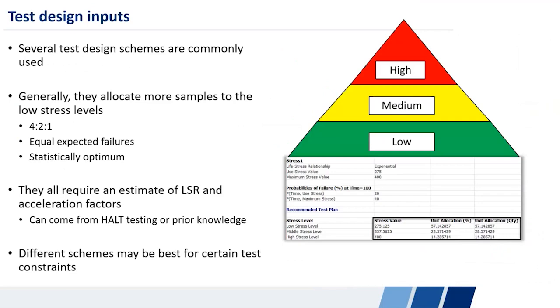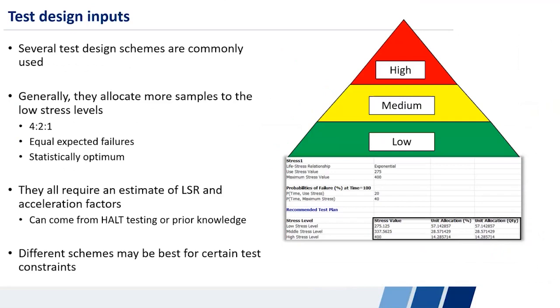And that kind of thing is done through an accelerated test scheme, which basically imposes a couple additional constraints onto our projected life stress relationship to tell us you should test this many samples at these stress levels. And generally they allocate more samples or stress levels so that you get approximately the same number of failures or approximately more failures at the lower stress levels, depending on the scheme that you choose.